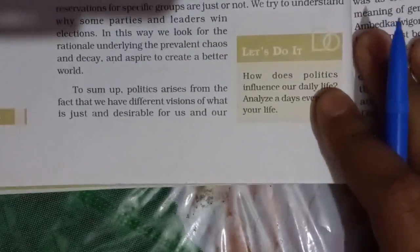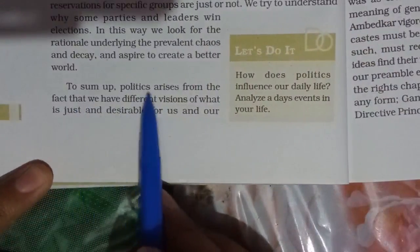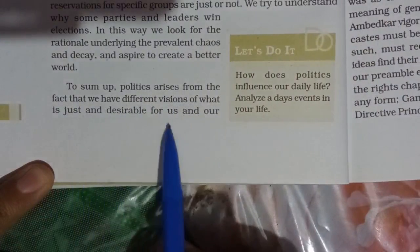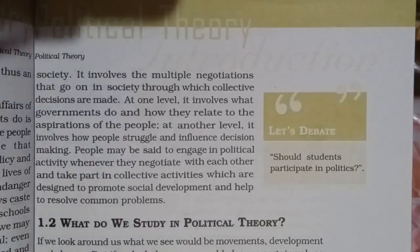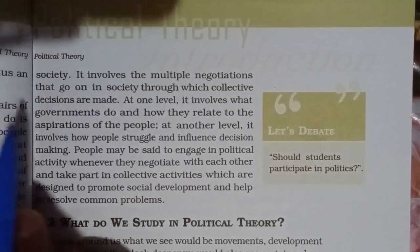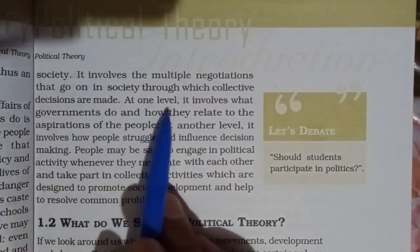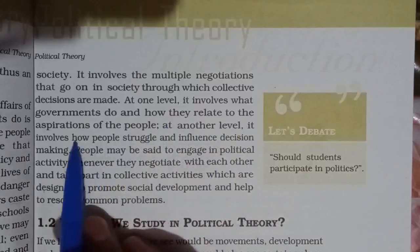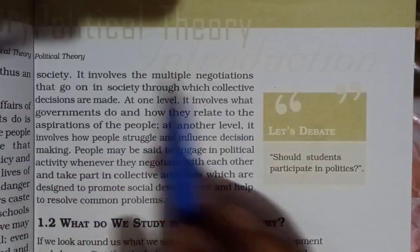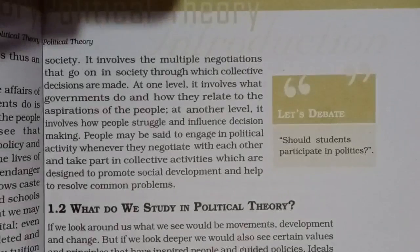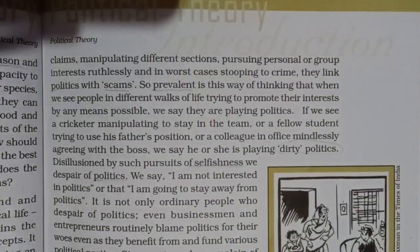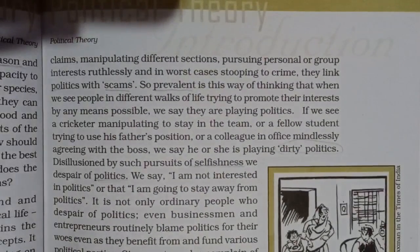To sum up: politics arises from the fact that we have different visions of what is just and desirable for us and others in our society. It involves the multiple negotiations that go on in society through which collective decisions are made. At one level, it involves what the government does and how it relates to the aspirations of the people. At another level, it involves people struggling. Now I will discuss a few important questions from this topic — What is Politics.